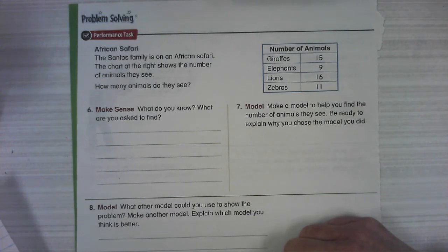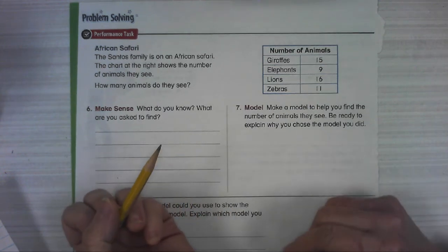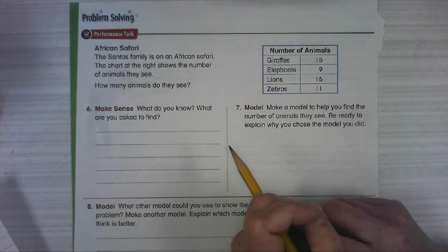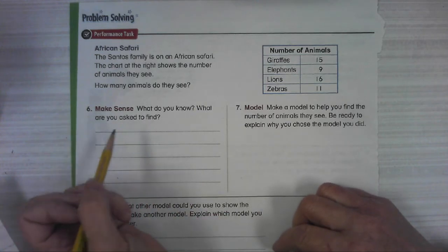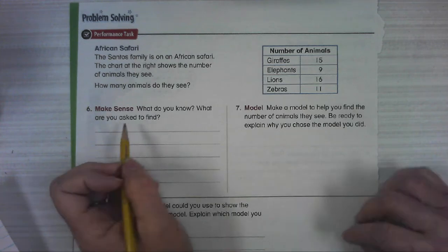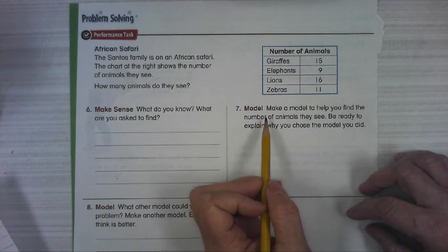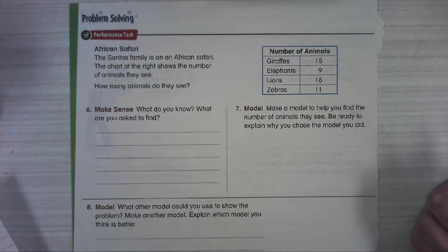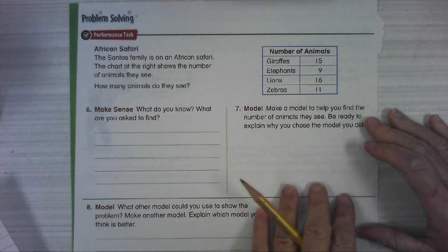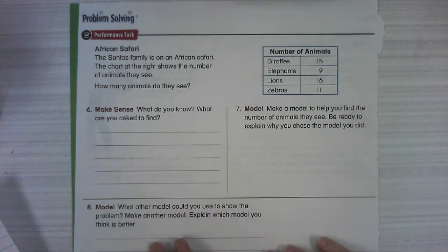So first, what do you know? What information do you have? And what are you asked to find? Okay, so what do we know and what is the question? What are we having to solve? Pause and come back when you're ready for number 7. 7 says make a model to help you find the number of animals they see. Be ready to explain why you chose the model you did. So some kind of way to work it out. Any kind of way. That's like a picture that we can all see.